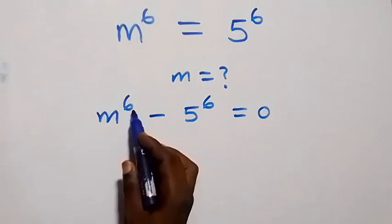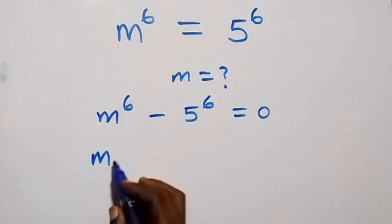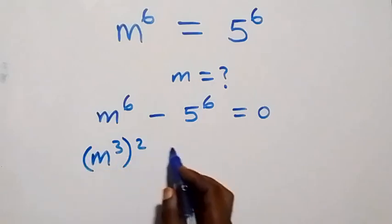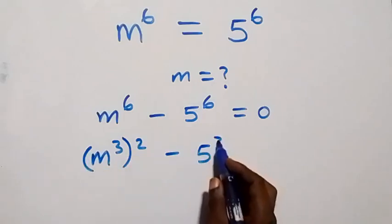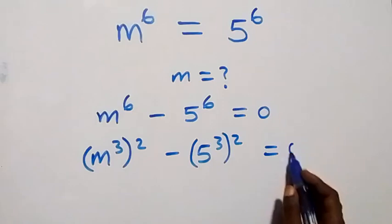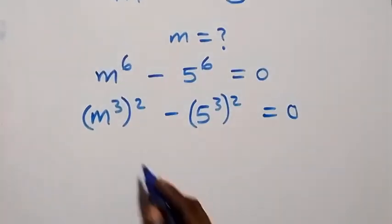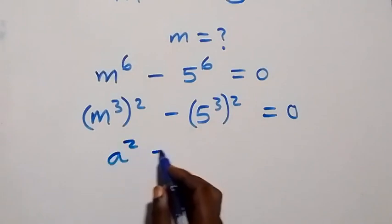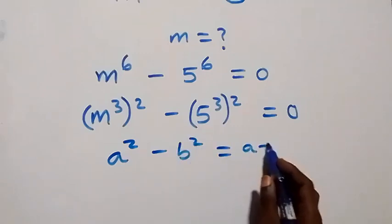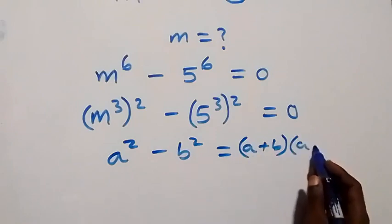We can write 6 as 3 times 2, which implies we have m raised to power 3, then raised to power 2, minus 5 raised to power 3, then raised to power 2, now equals to 0. This follows from the difference of two squares: a squared minus b squared is the same as a plus b multiplied by a minus b.